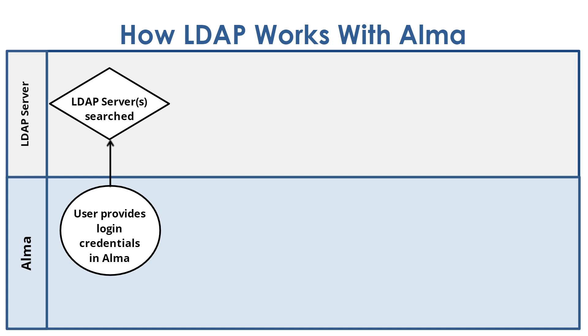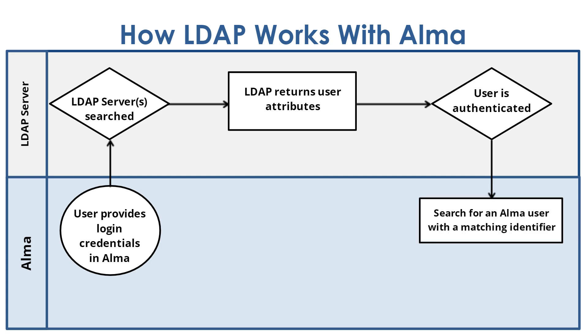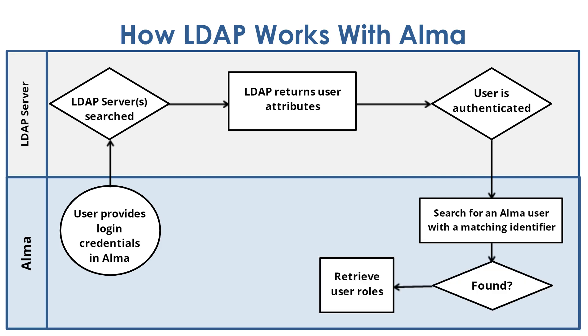If the user is found, the LDAP returns the user attributes, including their unique ID, to Alma. Alma then searches for the user based on their unique ID. Once found, Alma retrieves the user's roles and logs them into Alma.